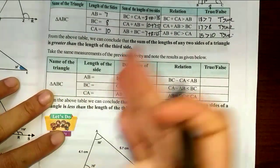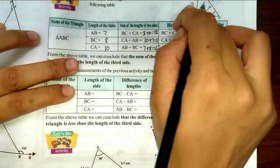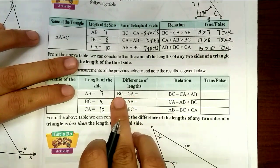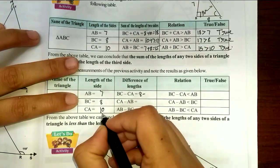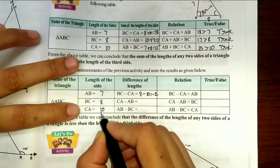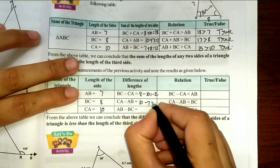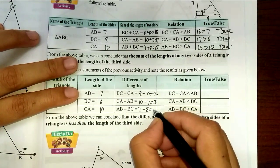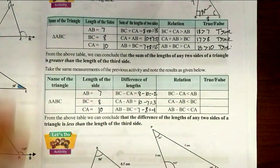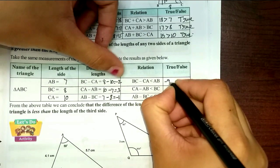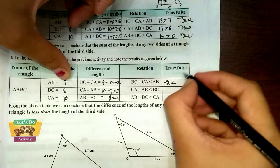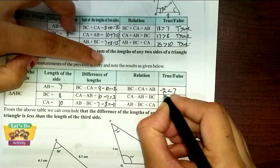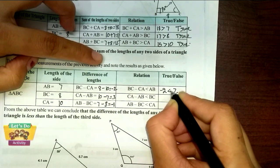Triangle ABC: AB = 7, BC = 8, CA = 10. Subtraction: BC minus CA = 8 minus 10 = minus 2. CA minus AB = 10 minus 7 = 3. AB minus BC = 7 minus 8 = minus 1. BC minus CA is minus 2, which is less than AB which is 7 — greatest number side, two openings, true.